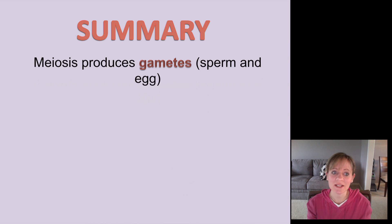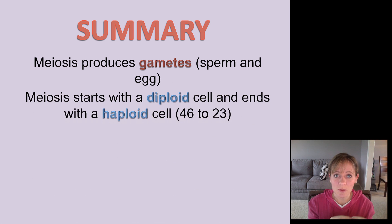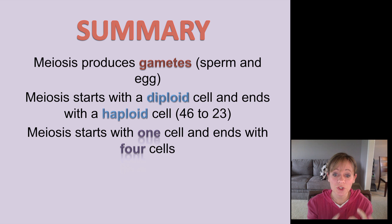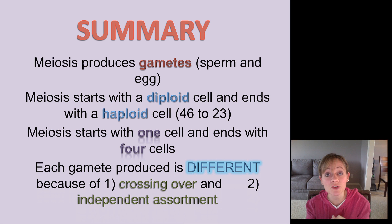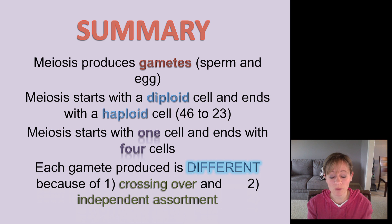Let's summarize meiosis. We're producing gametes — producing sperm and egg in the sex organs of the ovaries and testes. We're starting with a diploid cell that has 46 chromosomes and ending with a haploid cell that has 23. We're starting with one cell and ending with four cells. Each of those four gametes is different because of two reasons: crossing over happens in prophase I, that exchange of material, and then at metaphase there's independent assortment — they can line up in any fashion. So all gametes produced are different from one another.